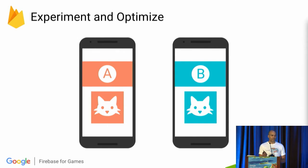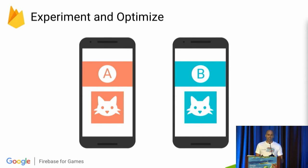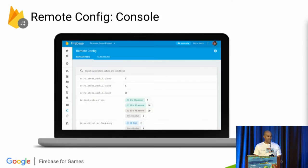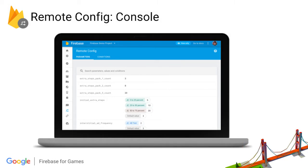Or perhaps people just prefer blue cats in their games. You can also use Remote Config to change any parameters in your game like UI, ad placement, difficulty, or whatever you can imagine. We provide a web interface for remote configuration so non-programmer members of your team — like game designers and operations teams — can configure and run an experiment.